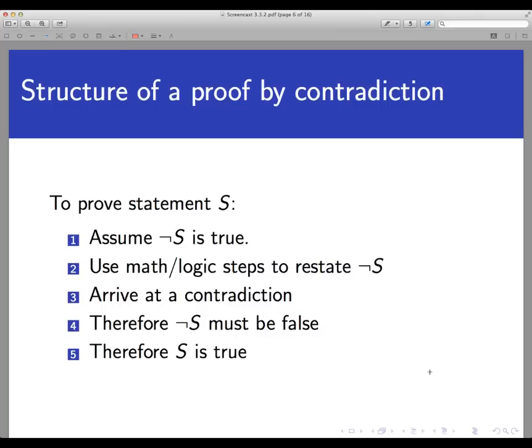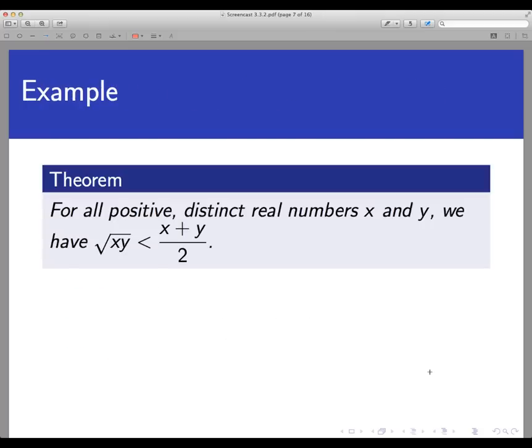So let's put this to work in another example. The theorem says that for all positive distinct real numbers X and Y, we have that the square root of XY is less than X plus Y divided by 2.